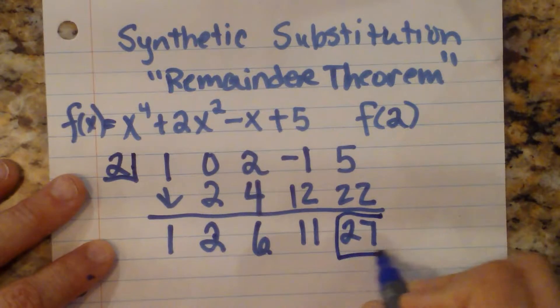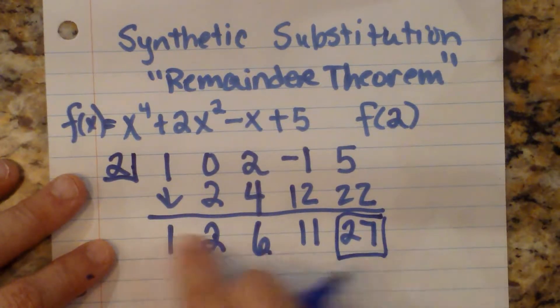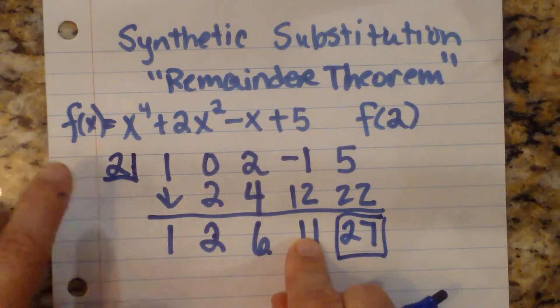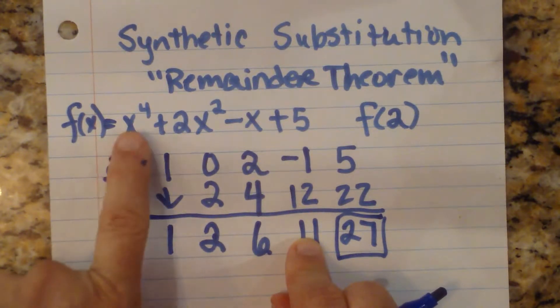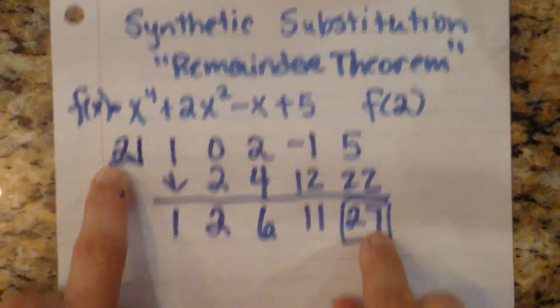What we want to look at is this remainder. We really don't care about the polynomial we've created. What this tells us is when we plug in 2 into the function, our output is 27.